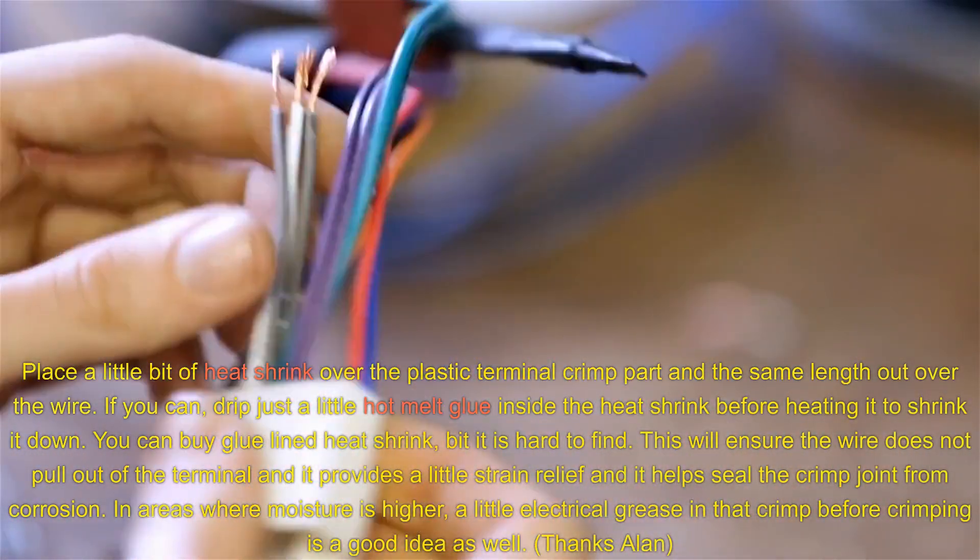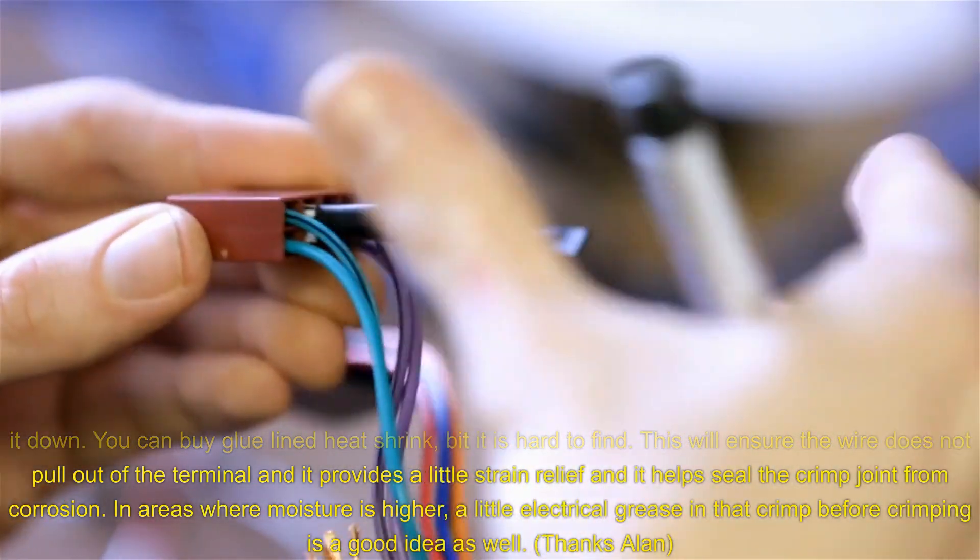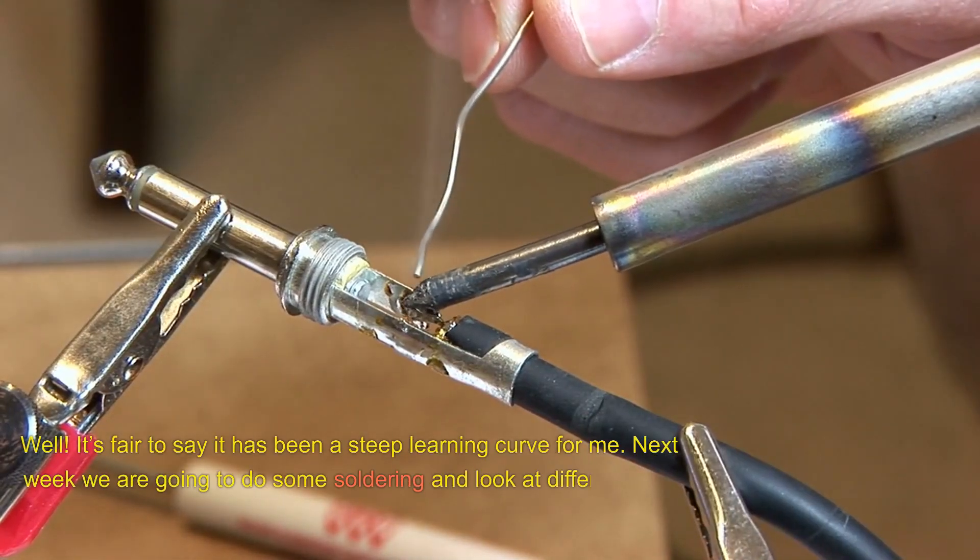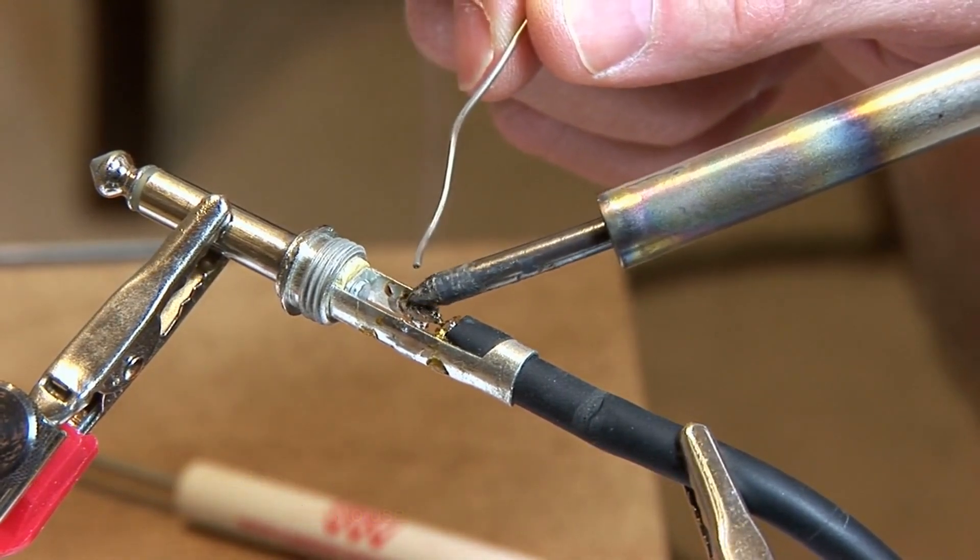In areas where moisture is higher, a little electrical grease in that crimp before crimping is a good idea as well. Thanks, Alan. Well, it's fair to say it has been a steep learning curve for me. Next week we're going to do some soldering and look at different wire sizes to use.